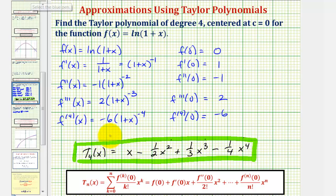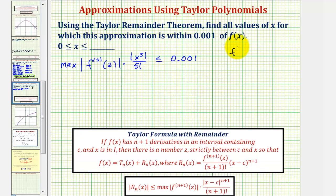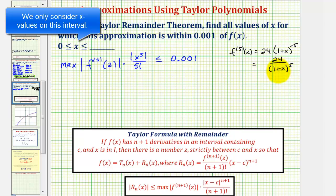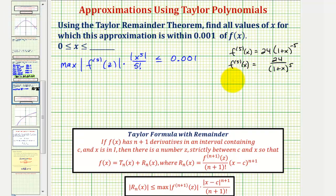Going back to the previous slide, the fifth derivative equals positive 24 times the quantity one plus x to the power of negative five, which we can write as 24 divided by the quantity one plus x to the fifth. The maximum value occurs when x is zero, giving 24 divided by one. If we increase x, we divide by a larger number, decreasing the function value. Therefore the maximum of the fifth derivative occurs when z equals zero, which gives 24, so the maximum of this absolute value is 24.